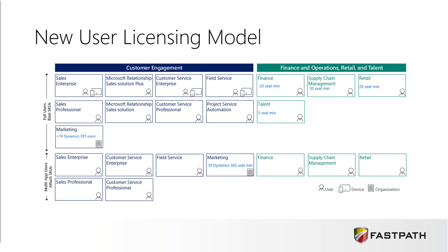You weren't able to buy, for example, a unified ops plan. You'd have to actually go in and buy a finance, a supply chain management, a retail, or a talent plan. And then you still had your team member and activity licenses underneath those as well.